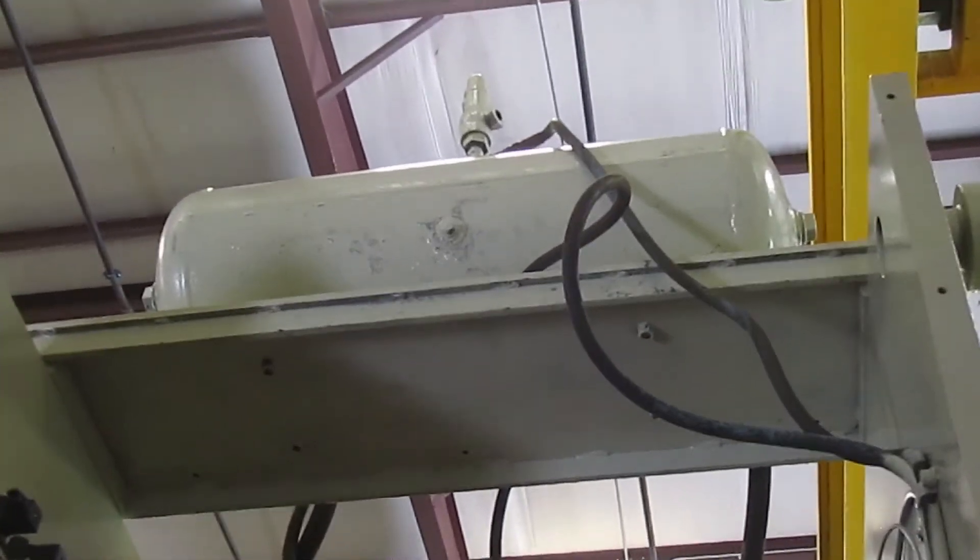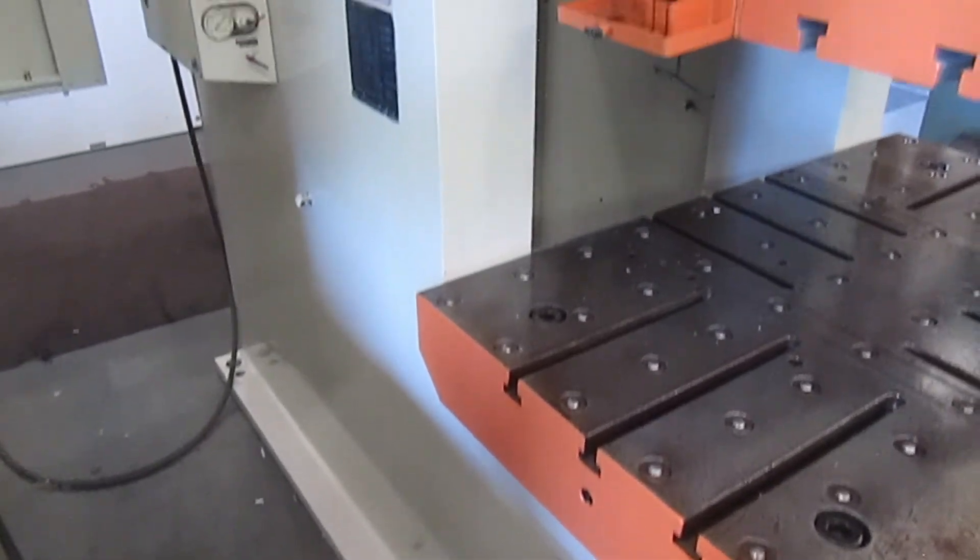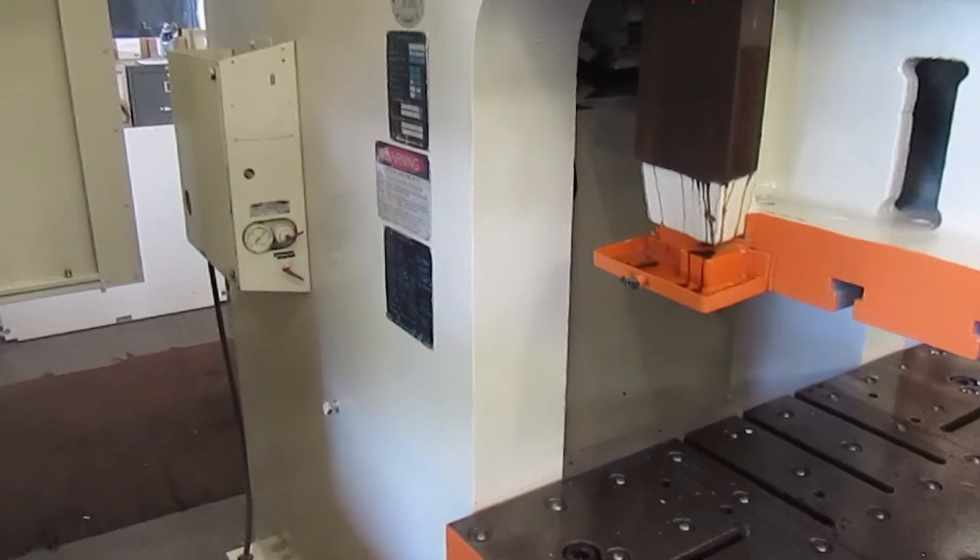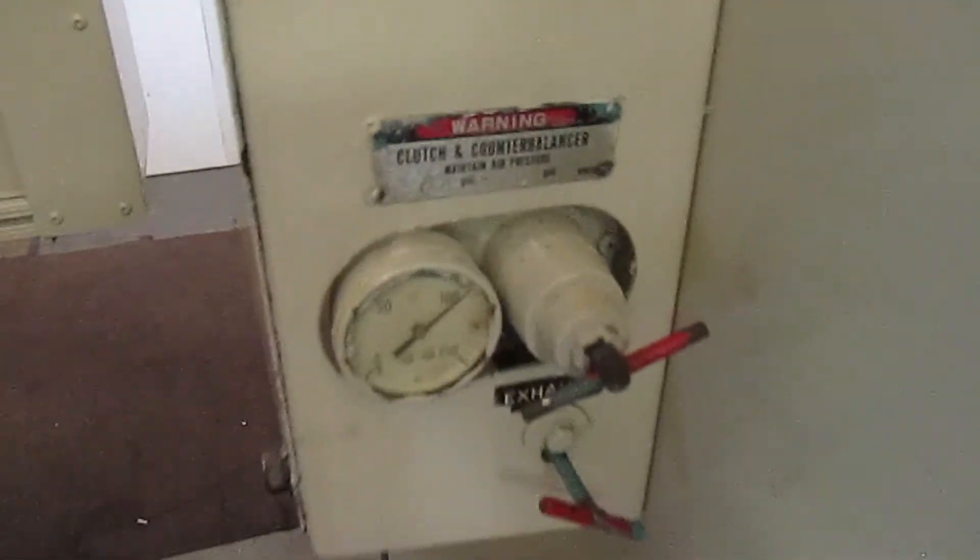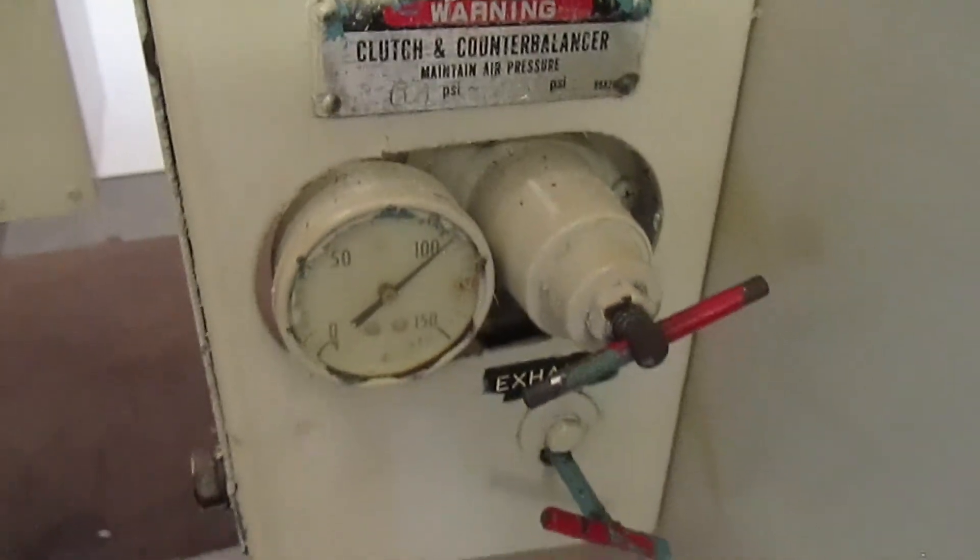Air tank. Here's the left side of the press. Right here's the clutch and counterbalance air pressure.